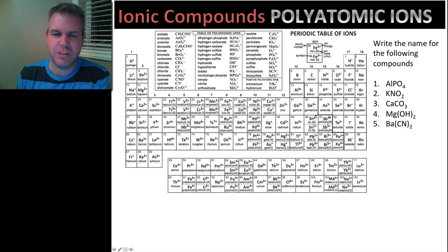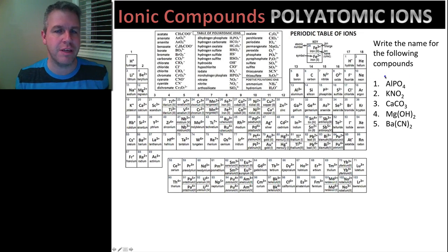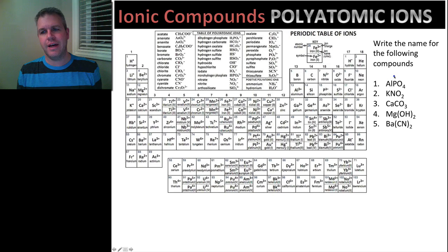Now we're going to, just like I've done in the last few videos, run through a few examples of how to name polyatomic ions. Here we're going to go from the formula to the name, which I believe is the easier way. In the next video we're going to go from the name to the formula, which will be a little bit more difficult to deal with.